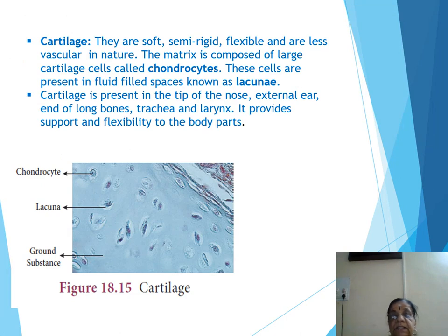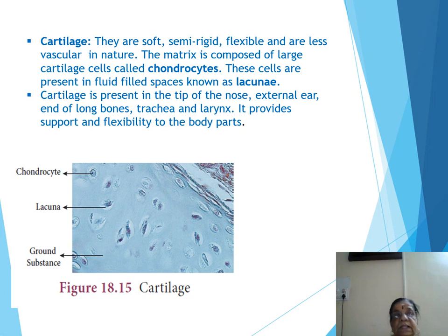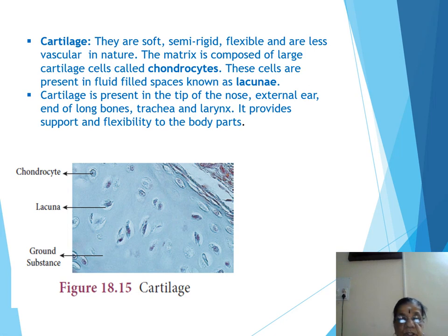Next we are learning about supportive connective tissue: cartilage and bone. Cartilage has widely spaced cells. The solid matrix is composed of proteins and sugars. Cartilage is a type of connective tissue with widely spaced cells, and its solid matrix is composed of protein and sugars.